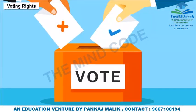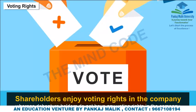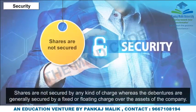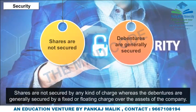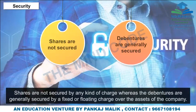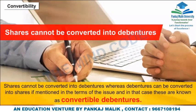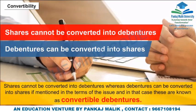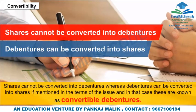Voting Rights: Shareholders enjoy voting rights in the company, whereas debenture holders do not have any voting rights. Security: Shares are not secured by any kind of charge, whereas debentures are generally secured by a fixed or floating charge over the assets of the company. Convertibility: Shares cannot be converted into debentures, whereas debentures can be converted into shares if mentioned in the terms of issue, and in that case these are known as convertible debentures.